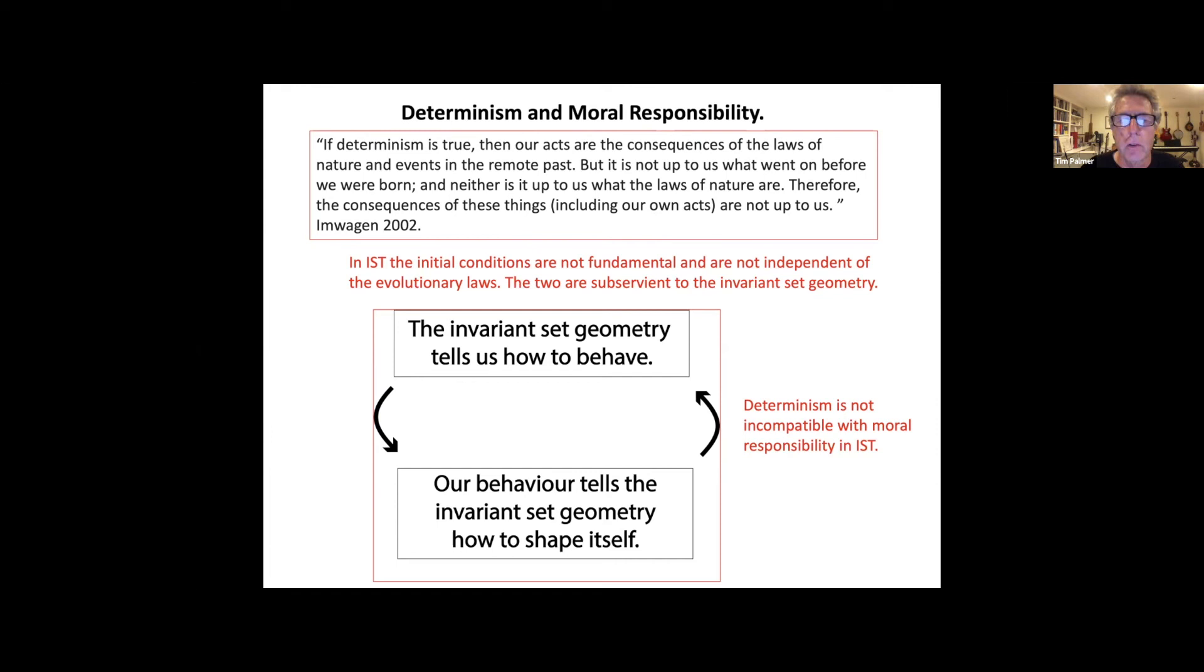In Invariant Set Theory, the initial conditions are actually not fundamental and they're not independent of the evolutionary laws. The two are subservient to the invariant set geometry. There's a kind of dualism which is very similar to John Wheeler's dualism about general relativity: spacetime tells matter how to move, and matter tells spacetime how to curve. In this case, in some sense it's invariant set geometry tells us how to behave, but our behavior also tells the invariant set geometry how to shape itself. I believe that this could be a way of overcoming this very difficult problem of believing on the one hand in determinism and on the other hand believing in the fact that we have moral responsibility for what we do in our lives.